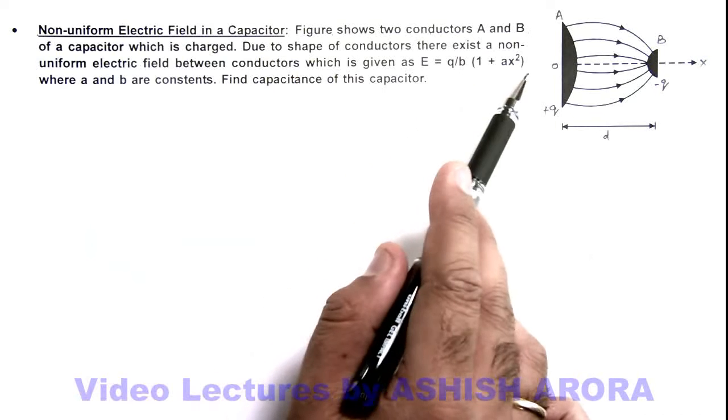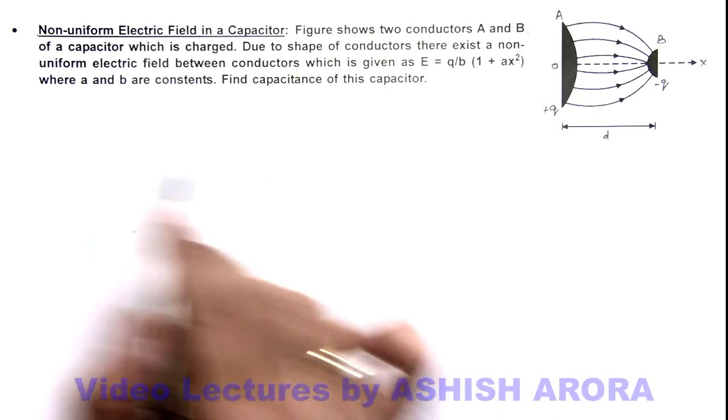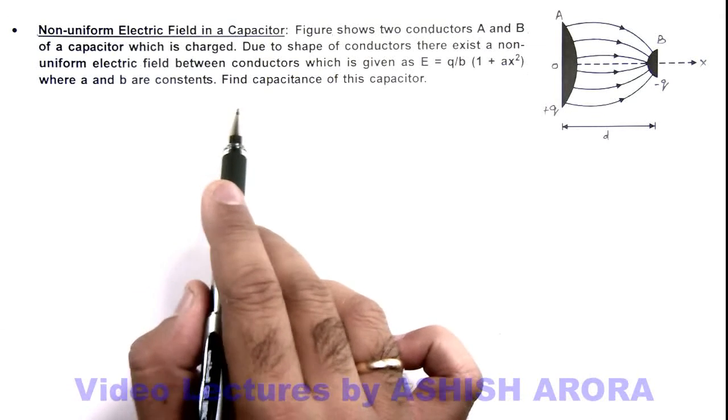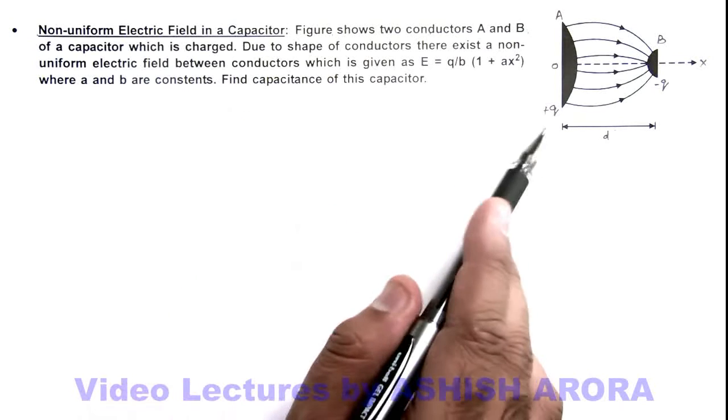E = q/(b(1 + a·x²)), where a and b are constants. And here we are required to find the capacitance of this capacitor.